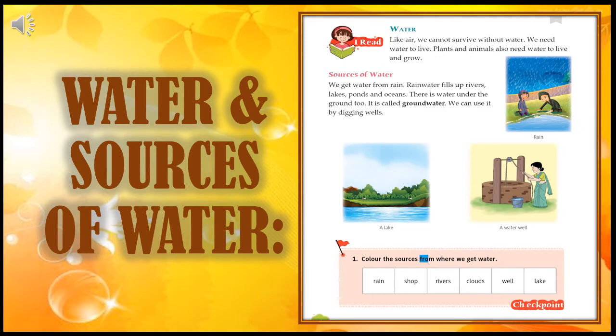Now let us solve checkpoint number one on page number 48: Color the sources of water. Here you have to color the boxes where the sources of water are given. The options are rain, shop, rivers, clouds, wells, and lake. You have to color the boxes where the source of water is given.